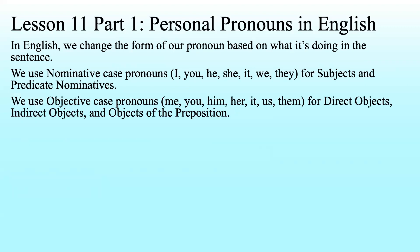We use objective case pronouns — me, you, him, her, it, us, and them — for direct objects, indirect objects, and objects of the preposition. This is very similar to the dative and accusative case in Greek, though the genitive case in Greek can also be used for objects of prepositions. So the idea of 'objective' in English is very close to the dative and accusative — covering direct objects, indirect objects, and objects of prepositions.